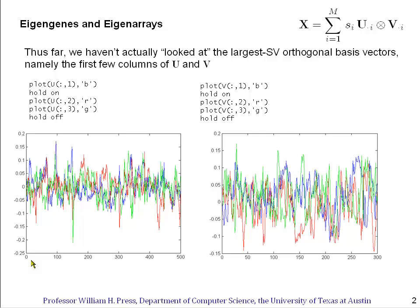We have 500 genes in this set, and here I'm showing you the amplitudes along these 500 genes of the first in blue, second in red, and third columns of the U matrix. And similarly, I can show you the first, second, and third columns of the V matrix.